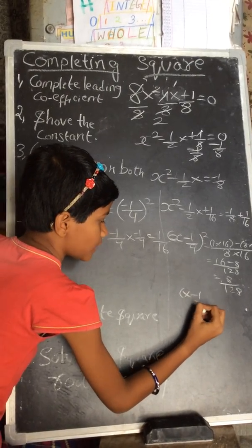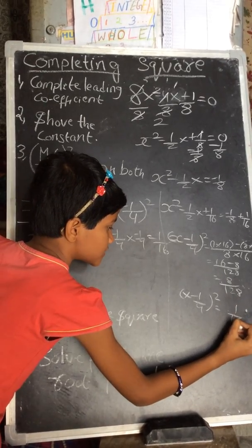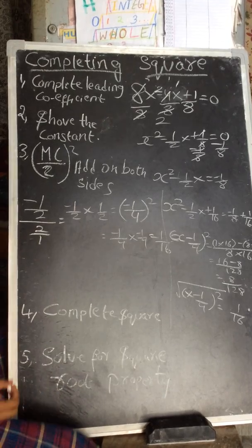So x minus 1 by 4 squared equals 1 by 16. Now we apply the square root property.